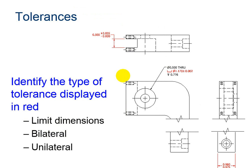So let's practice what you have learned. Identify the type of tolerance displayed in red. I would like for you to get in your mind which type of dimension this is. If you chose unilateral tolerance, you are correct because I have a separate plus and minus sign and it has tolerance in only one direction.